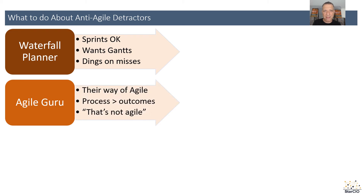A second type is almost the opposite — somebody who's done agile and scrum for a big part of their career. They have a preconceived notion of what their way of agile is and are focused on elements of the agile processes and the ceremonies. Sometimes they lose sight of the outcomes that agile or scrum is trying to achieve. They'll use the phrase 'that's not agile' as a way of saying you're doing something against the grain of the flavor of agile they want to see in the organization. I call this detractor the agile guru.